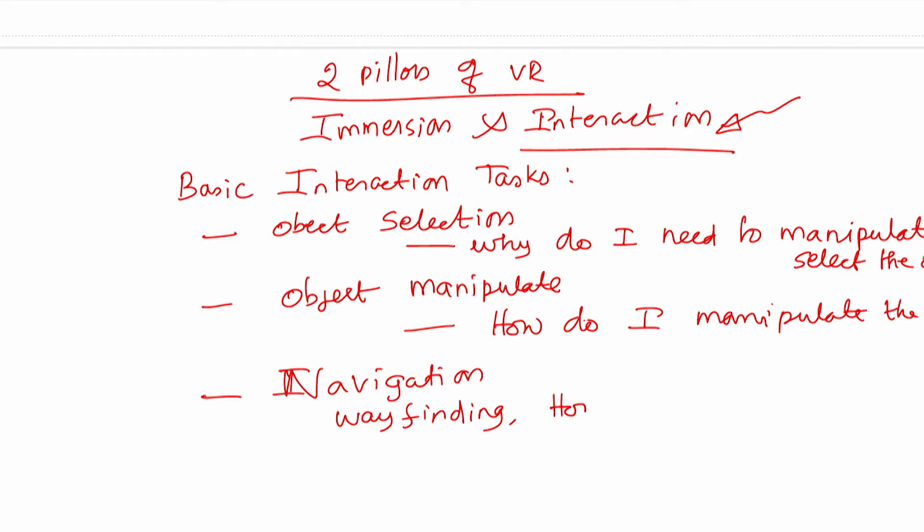Basically we want to answer: how do I get there from where I am? First we need to know where we are in the virtual reality. We need to find out where do we want to go and how do we go from where we are to actually there. The next object interaction is the system control. For example, we can change the system parameters.